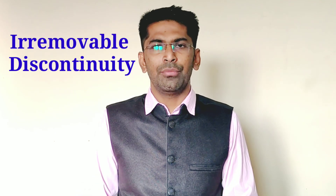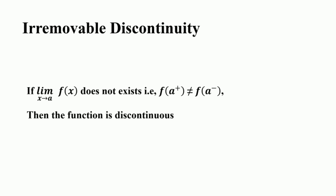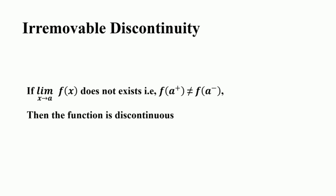If the limit of f(x) as x approaches a does not exist, then the function is discontinuous, and such discontinuity is called irremovable discontinuity. This discontinuity, caused by the non-existence of the limit at a point, cannot be removed by redefining the function. A function has irremovable discontinuity when the right-hand limit does not equal the left-hand limit, and such discontinuity cannot be removed by redefining the function.